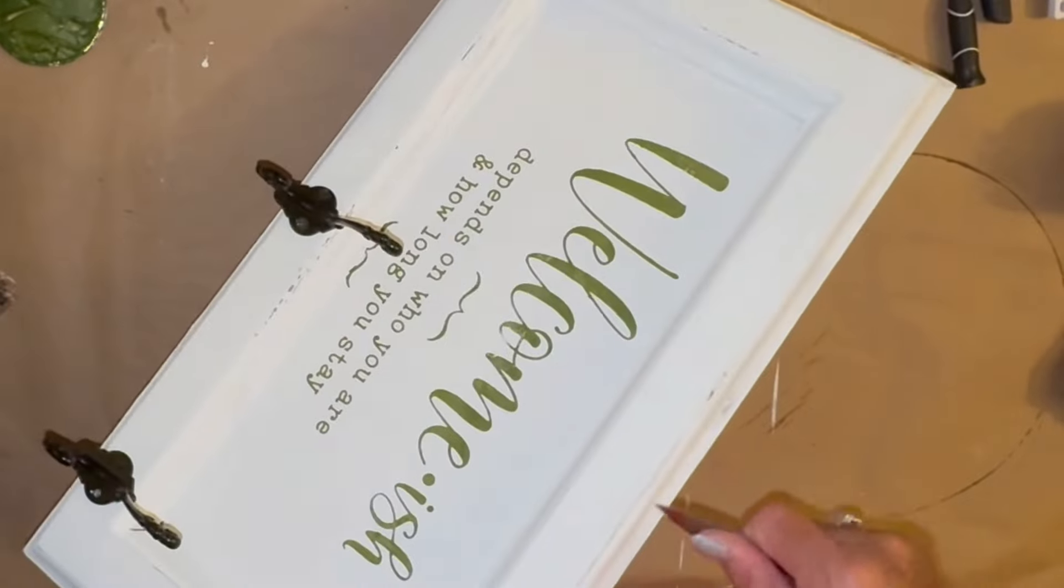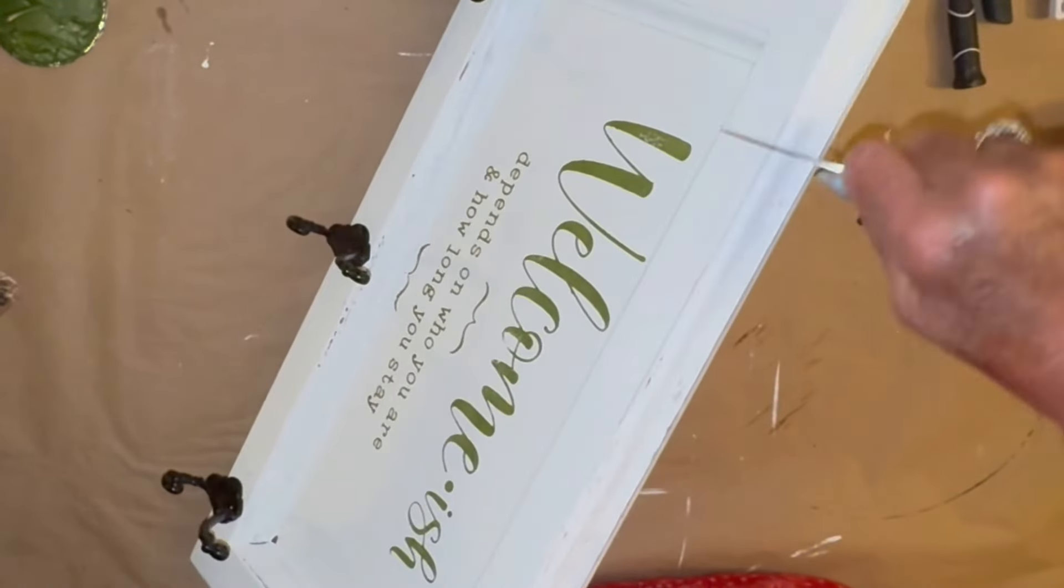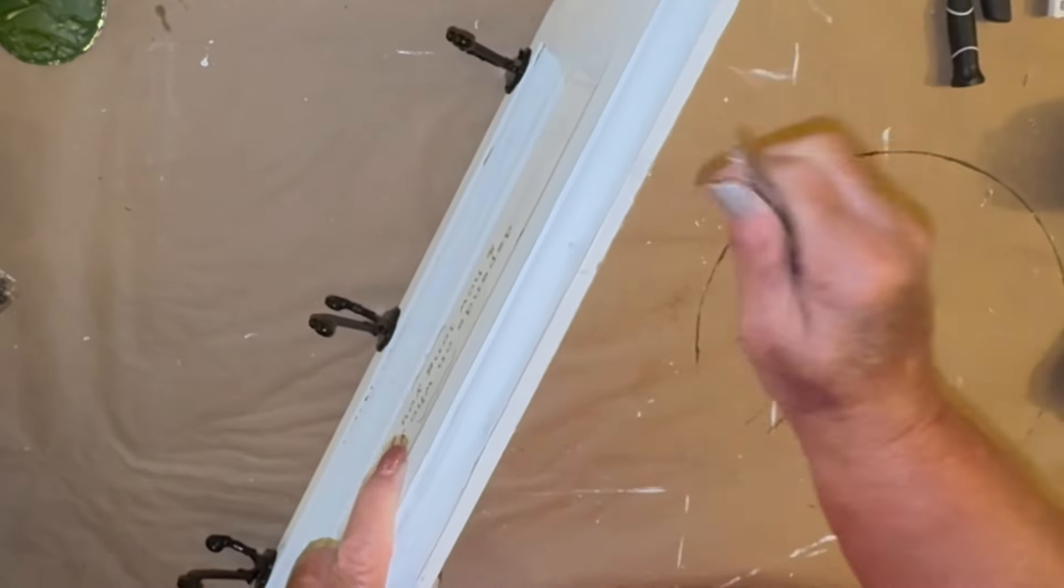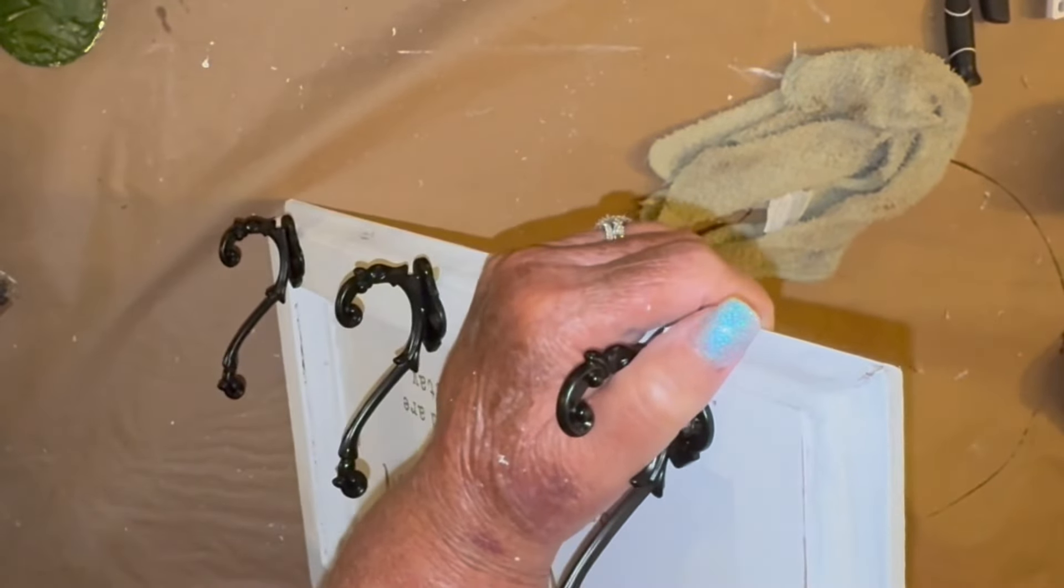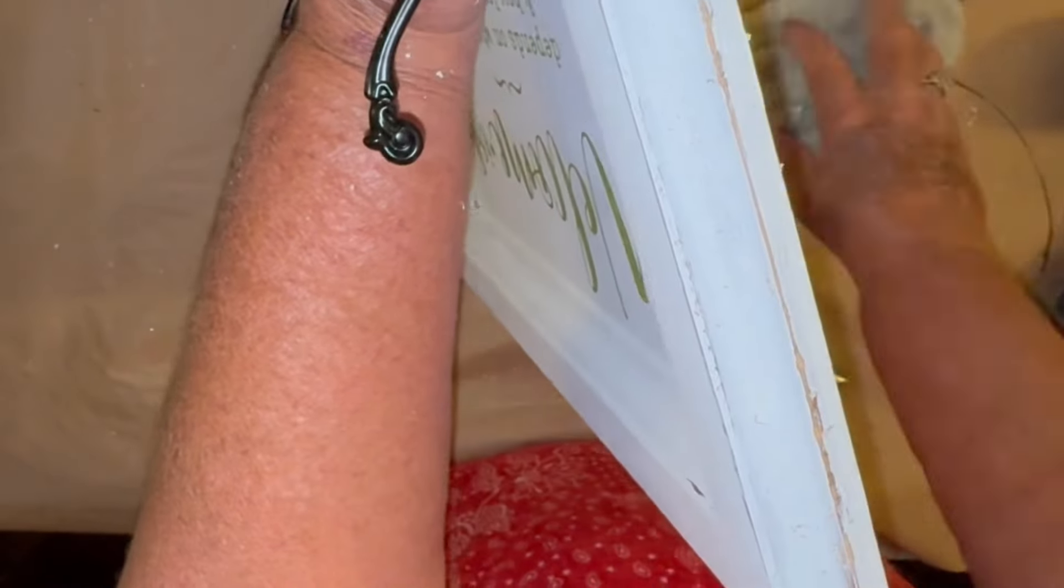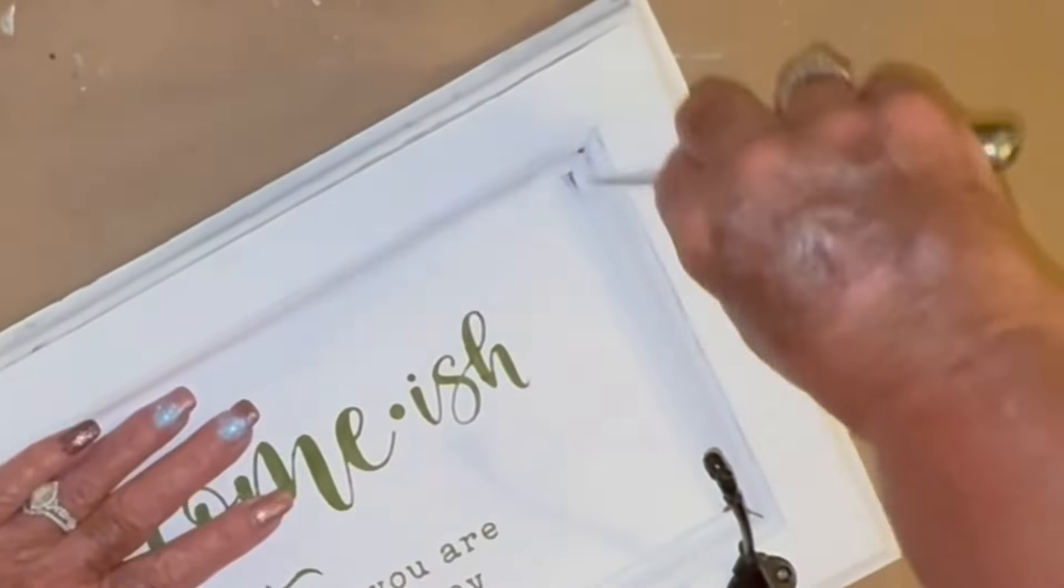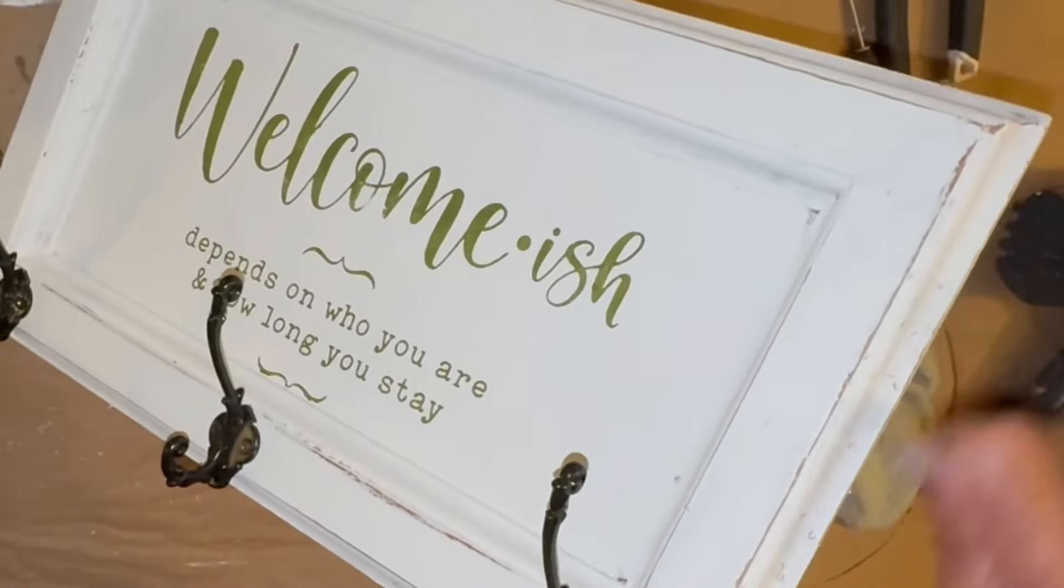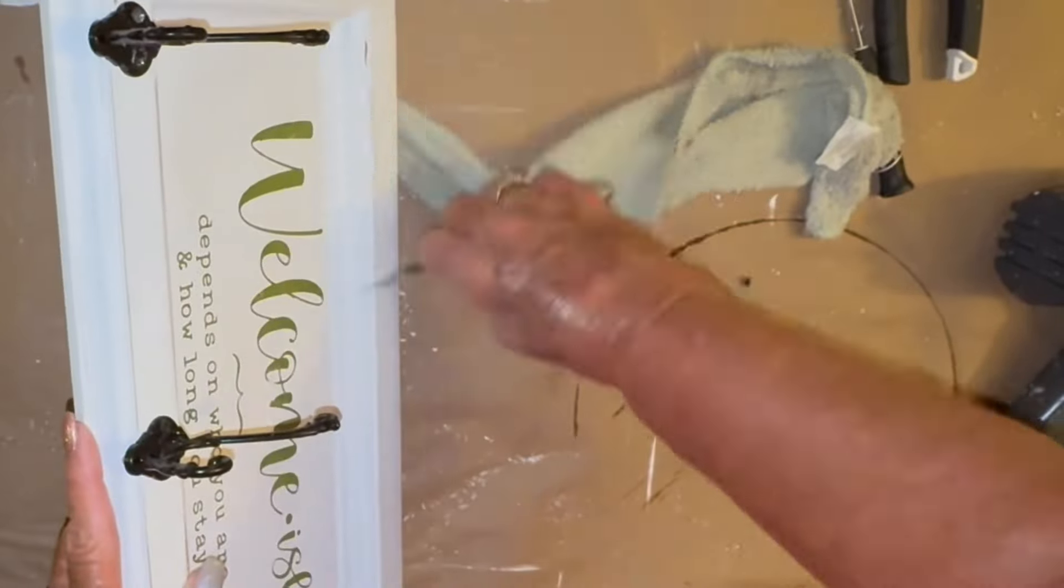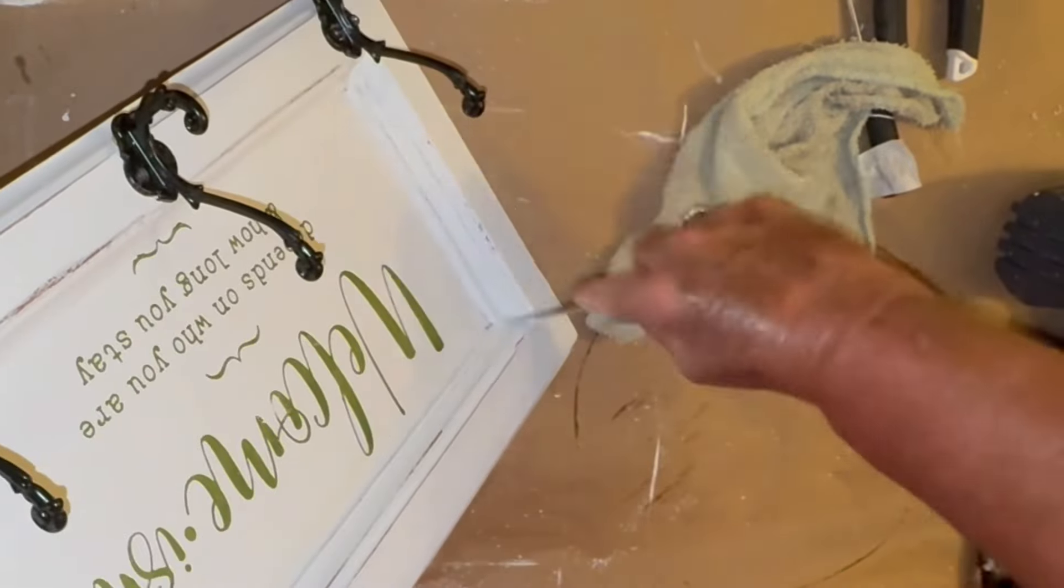So I found these hooks on Amazon and I'm just going to put three of them on there and I love that black up against that white and green. I think the colors are so pretty together. Now I'm going to take a knife, just a kitchen knife, a paring knife, an old knife that isn't real sharp anymore that I use in my craft room.